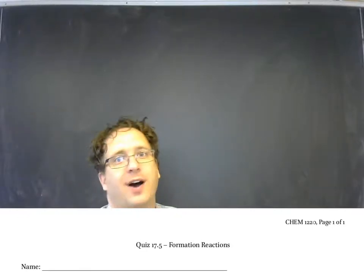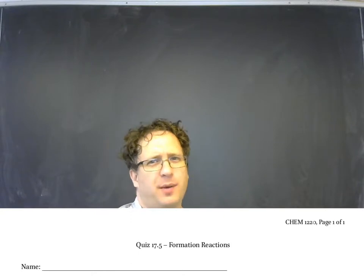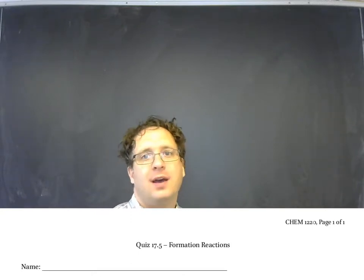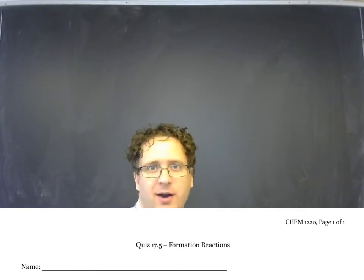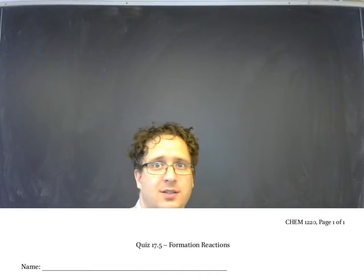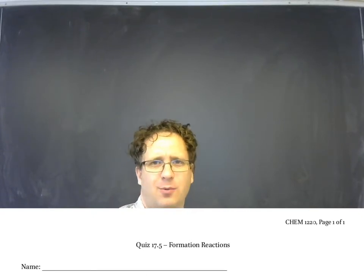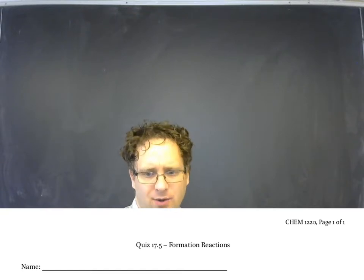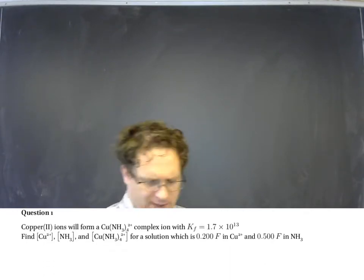Quiz 17.5 has to do with formation reactions. These are reactions where a metal cation will form a complex with one or more ligands. The interesting thing about formation reactions is that they tend to be highly product favored. That's the exact opposite of our weak acid, weak base, and sparingly soluble salts. And so we have to handle it in a slightly different way. So anyway, let's go to question one.